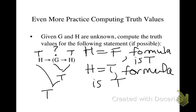And in either case, it doesn't matter what the truth value of G is. We don't need to know that. So overall, this formula is true. And we can figure that out without knowing the truth value of any of its parts.